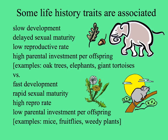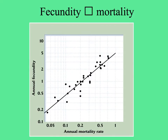A plant example of these correlated traits would be a big oak tree; an animal example is an elephant. At the other extreme are organisms that develop quickly, reach sexual maturity quickly, have a high reproductive rate, and low parental investment per offspring, such as insects and weedy plants. In general, annual fecundity is directly correlated with mortality — the more organisms reproduce and the more offspring they have, the more likely they are to die sooner.